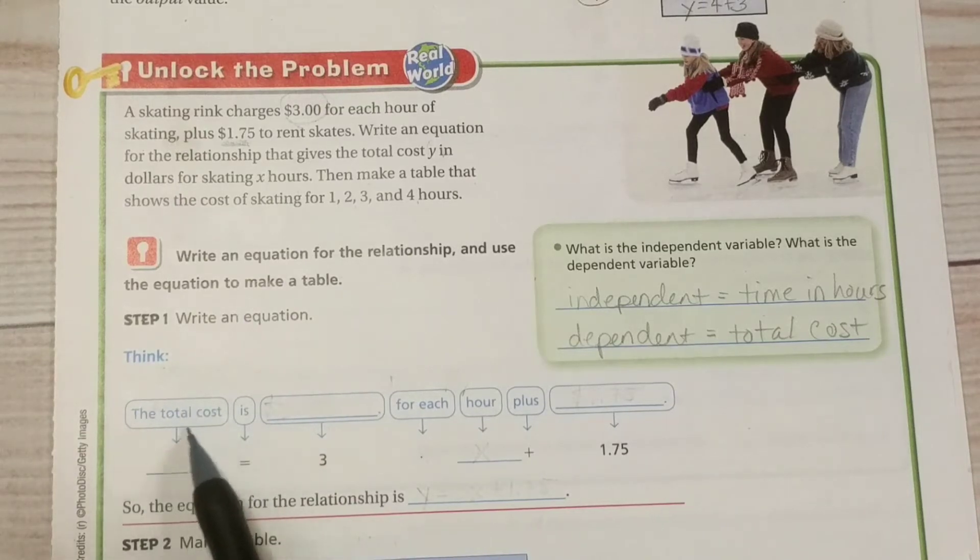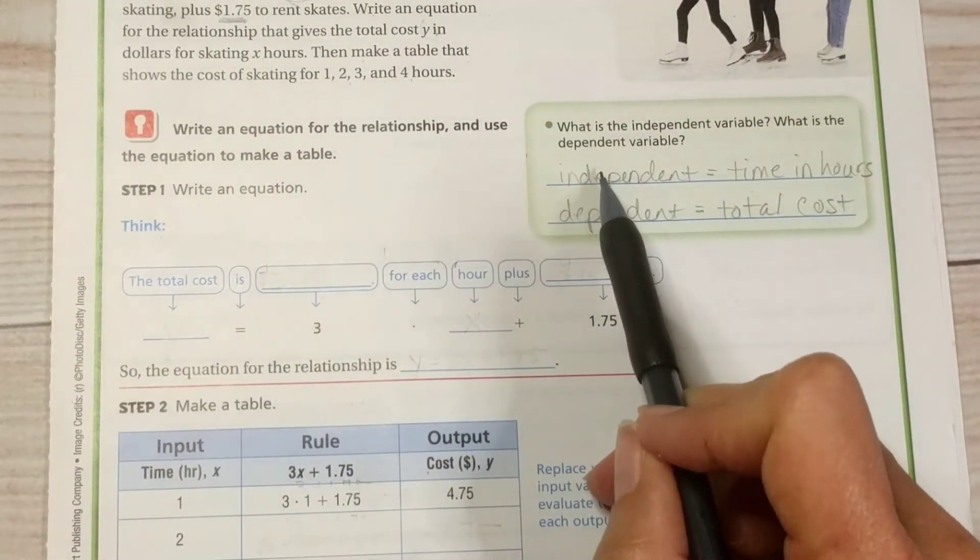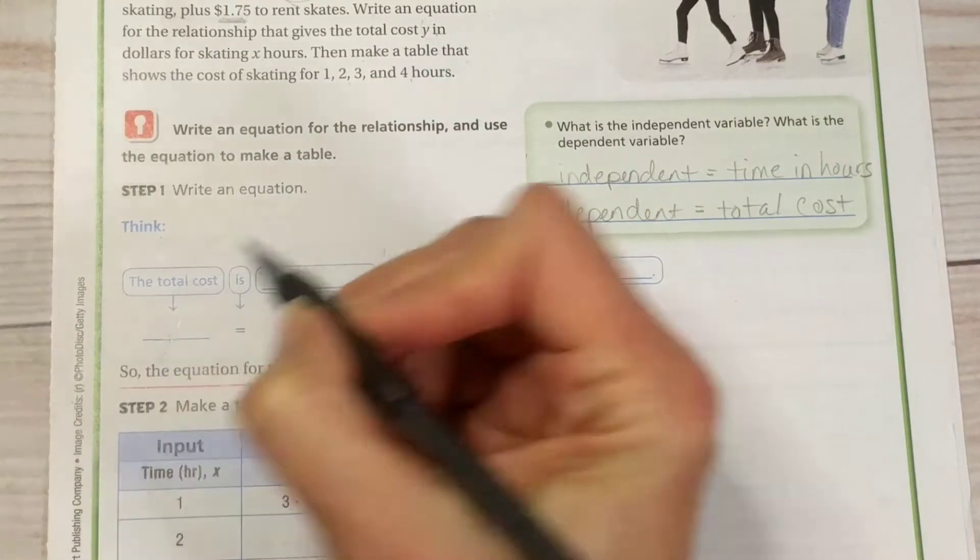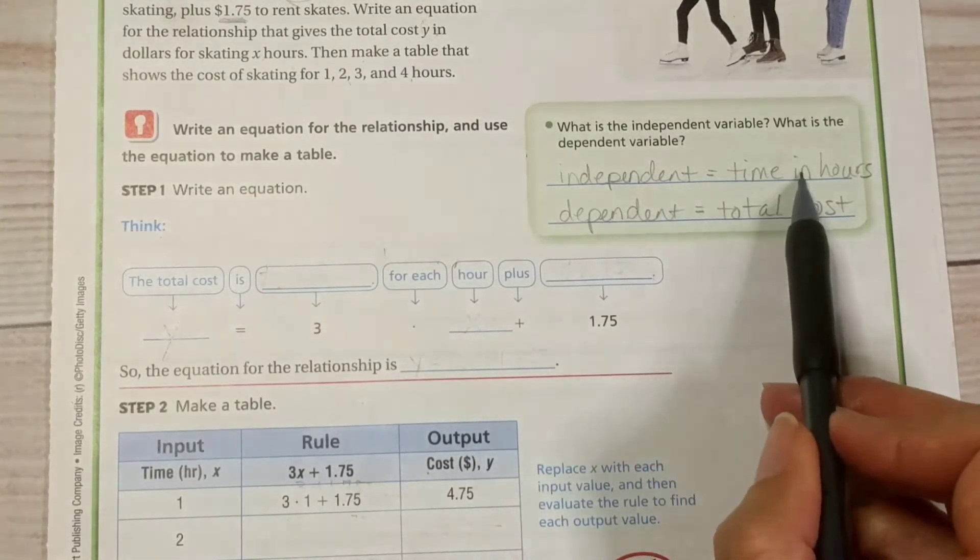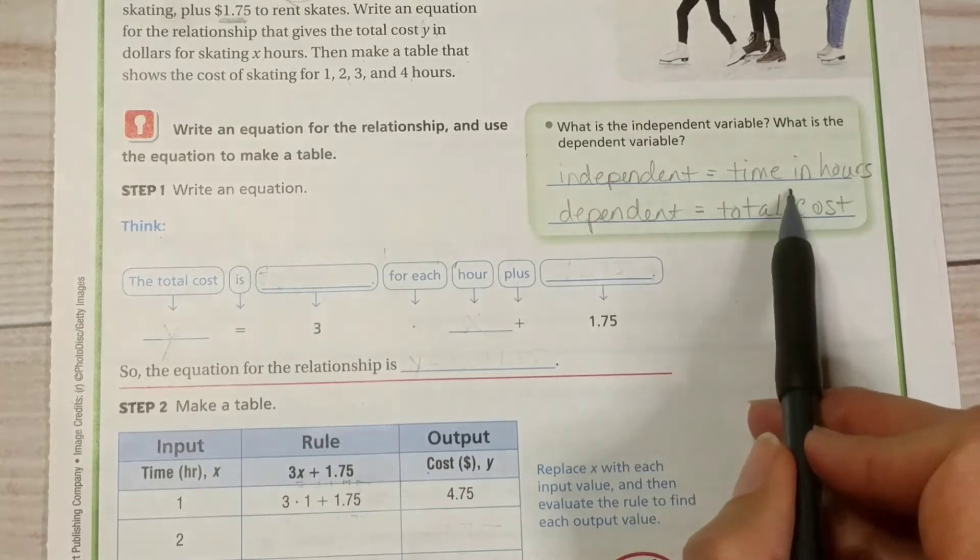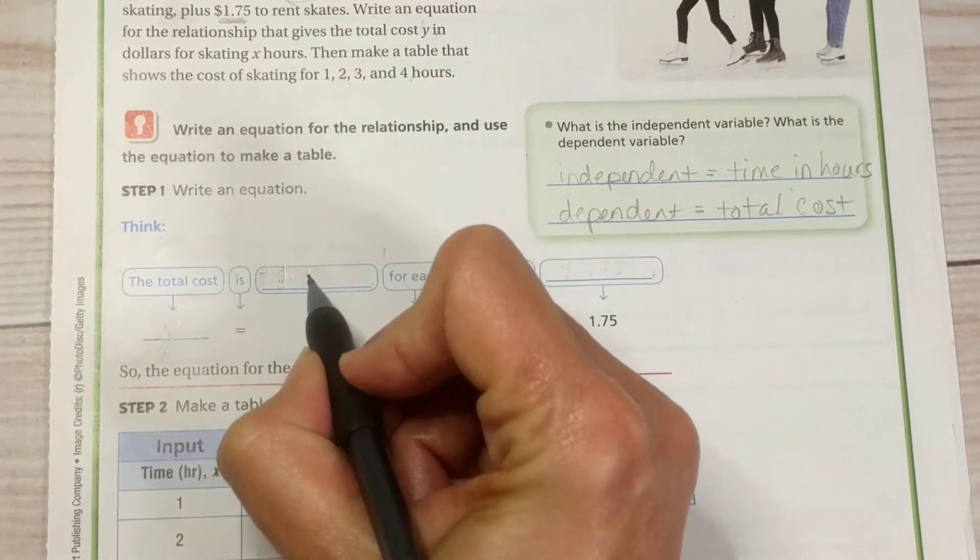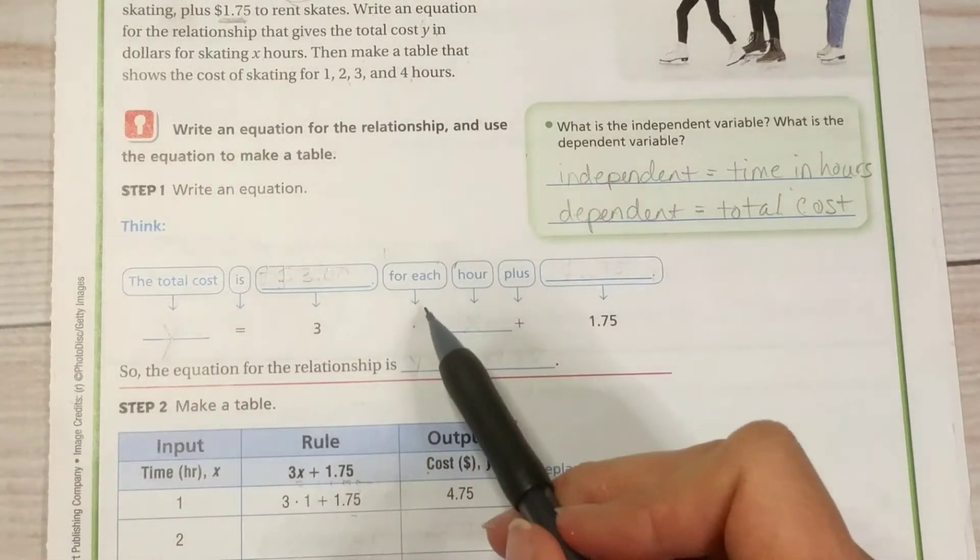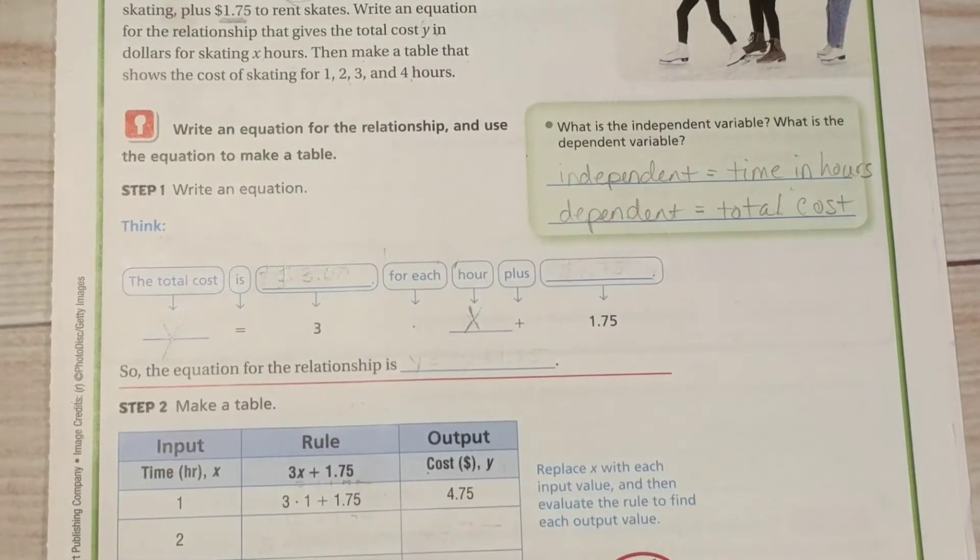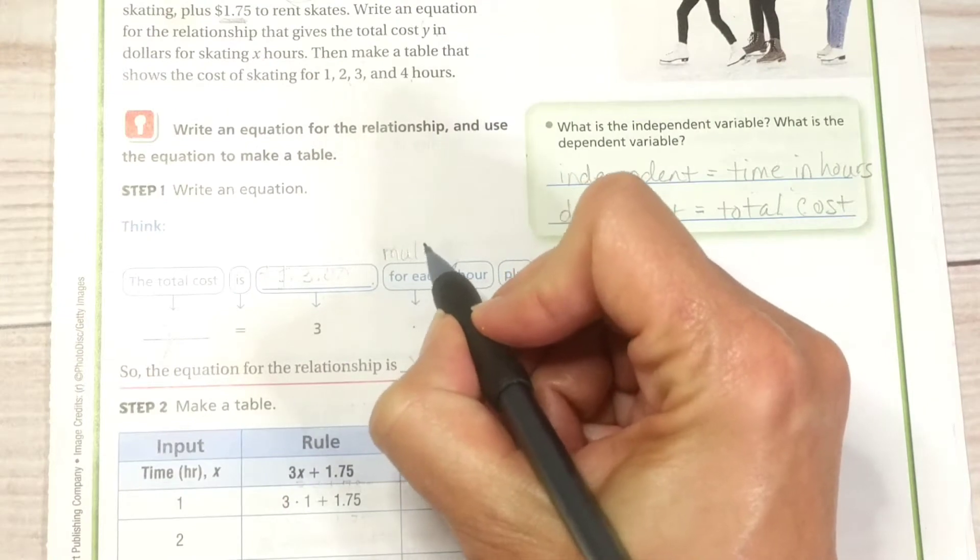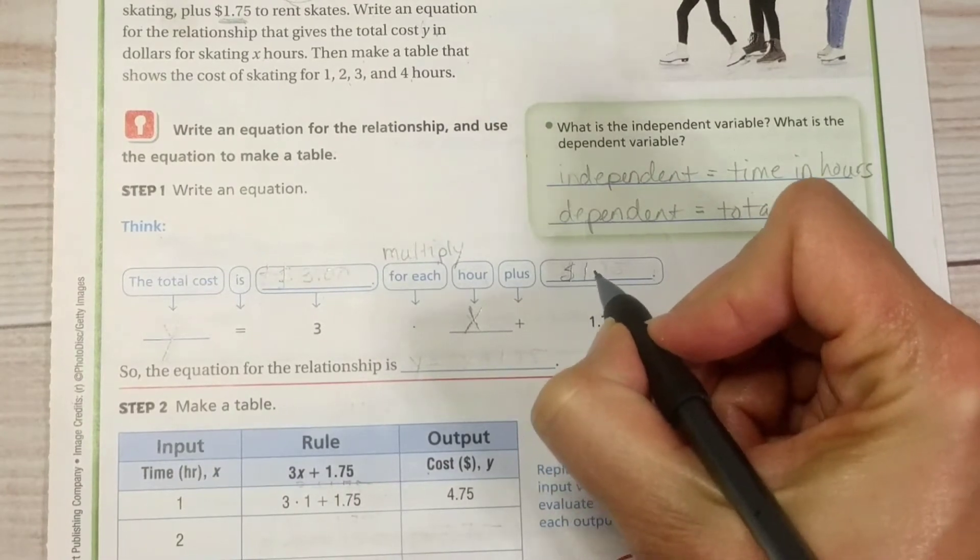So the total cost, our total cost, we don't know yet. It depends on how much time we spend. So that's y, our dependent variable. Dependent, the total cost is dependent on the time in hours. So our independent variable is the time in hours. Is or equals $3 for every hour we're there. For each hour, we don't know how long yet. So we're going to put an x there because we don't know how long we're going to be skating.